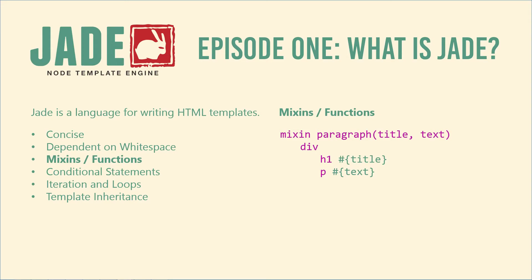Mix-ins are like functions from traditional programming languages. You can use them to dynamically generate content that previously you may have had to write multiple times. For example, this is a mix-in named paragraph that takes two arguments, title and text, and produces the HTML below it wherever it is called. Don't worry if you don't understand these now as they will be talked about in much greater depth later in the tutorial series.